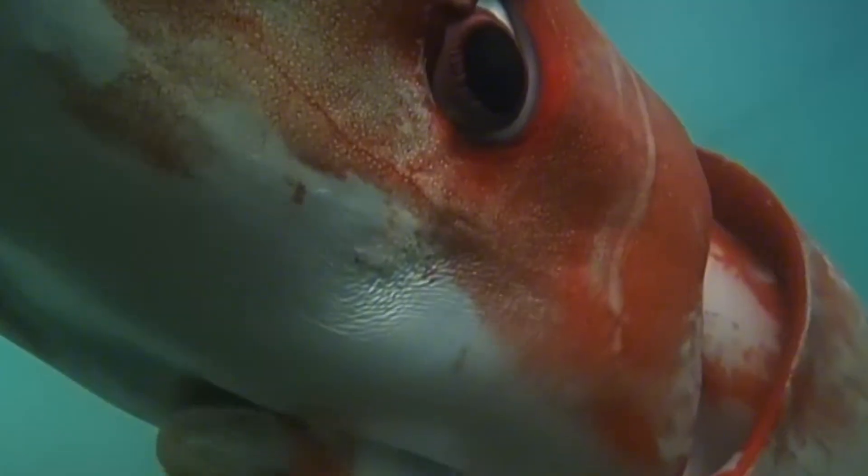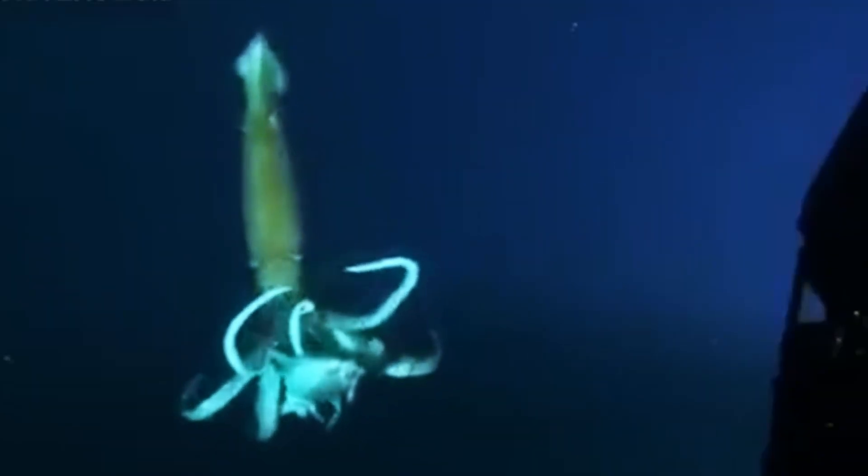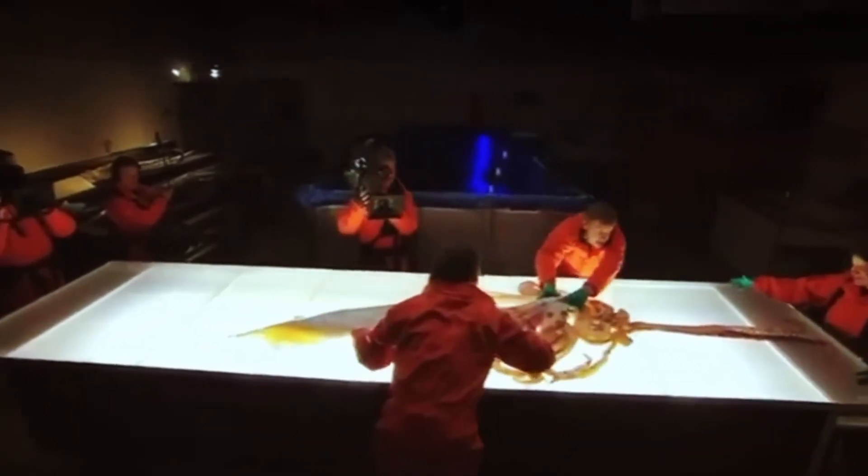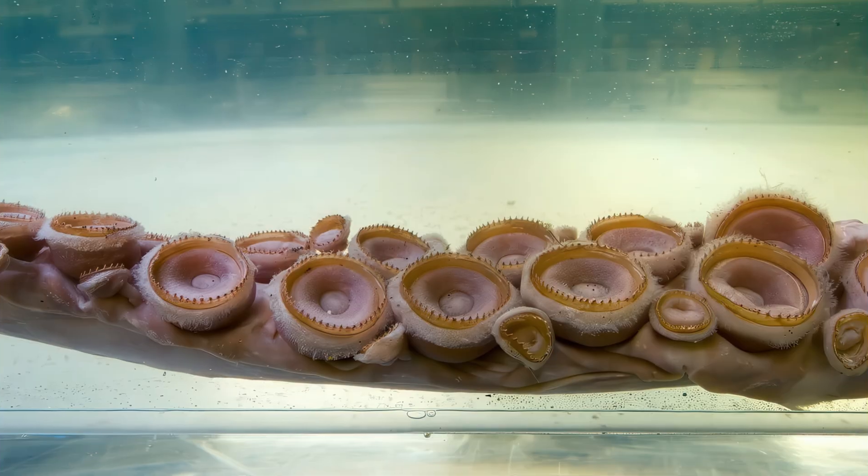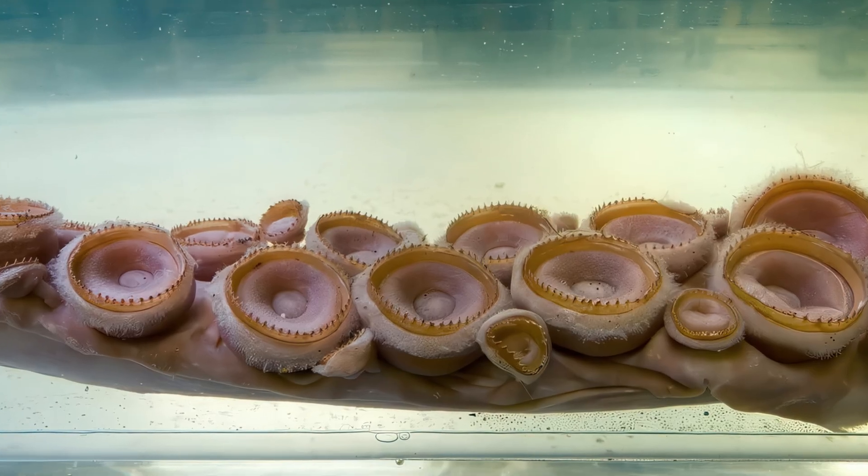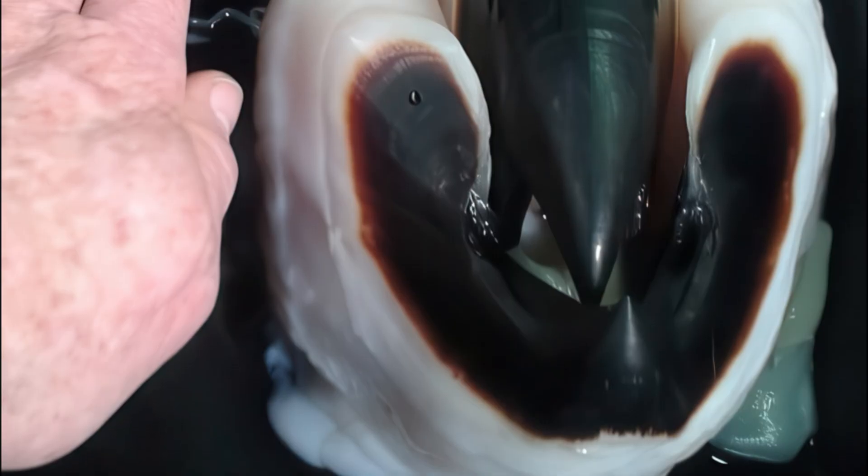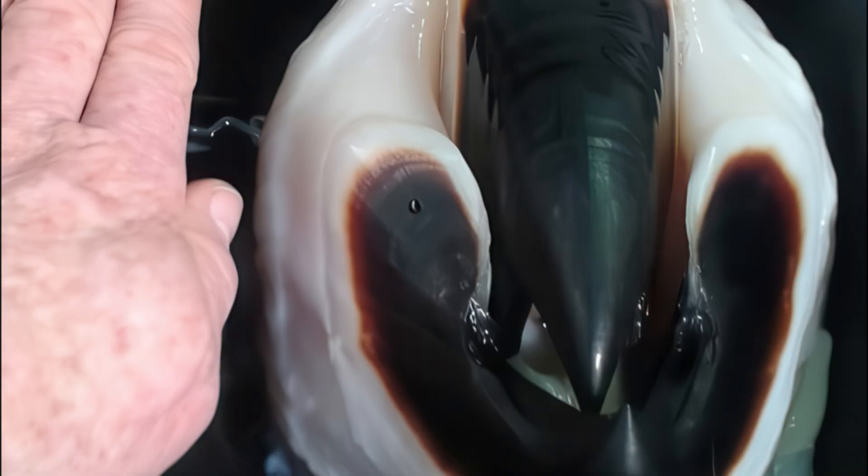The giant squid is an ambush hunter. It waits motionless in the dark, then strikes forward with a blast of jet-propelled water. Its two primary tentacles, twice the length of its body, are ringed with serrated suckers lined by tiny horned teeth. The beak at the center of its head is hard enough to cut through bone.